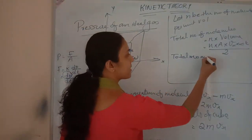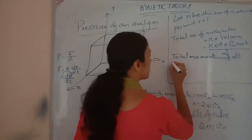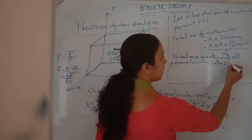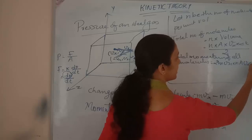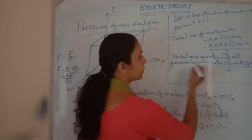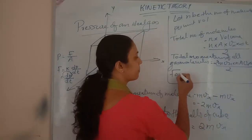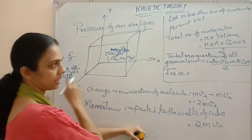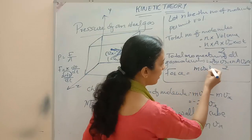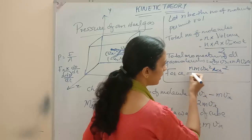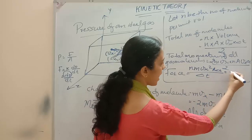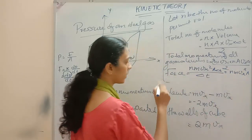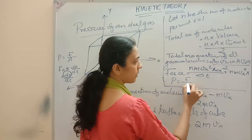The total momentum of all gas molecules hitting the wall is 2mvx × (1/2)·n·A·vx·Δt = n·m·vx²·A·Δt. Force equals momentum divided by time, so F = n·m·vx²·A. Pressure equals force divided by area, giving P = n·m·vx².